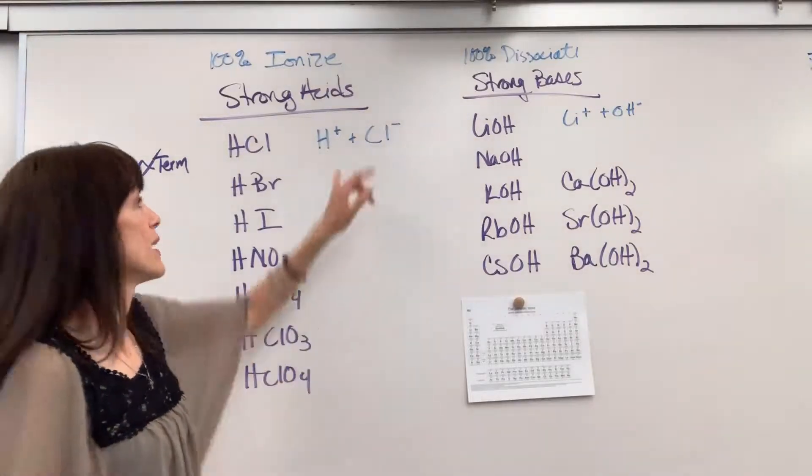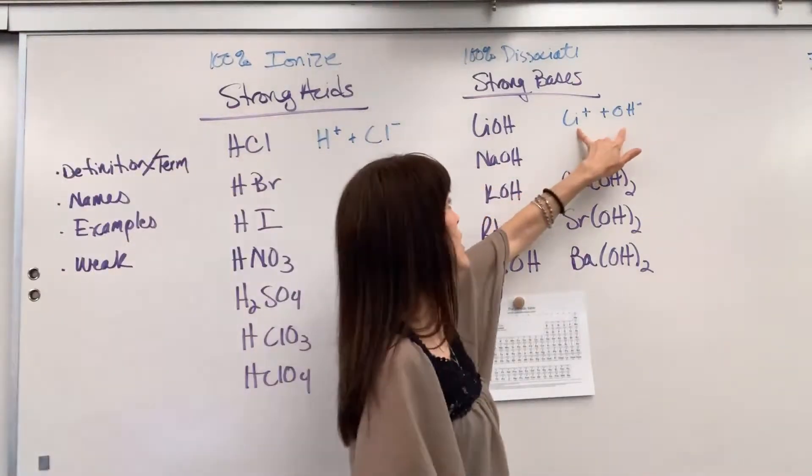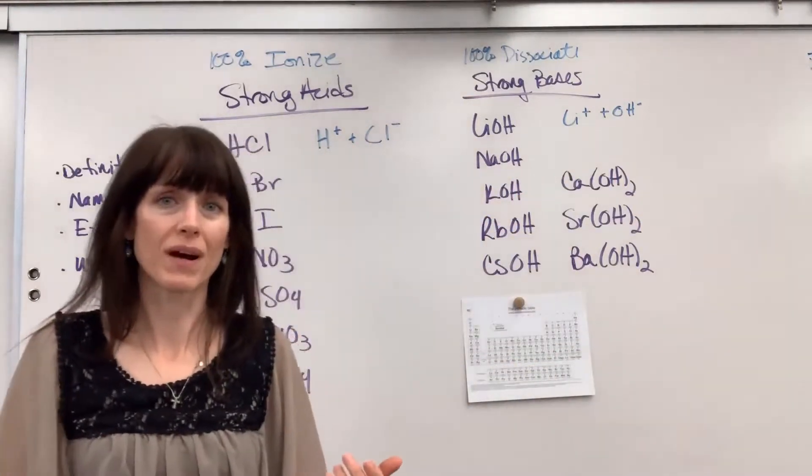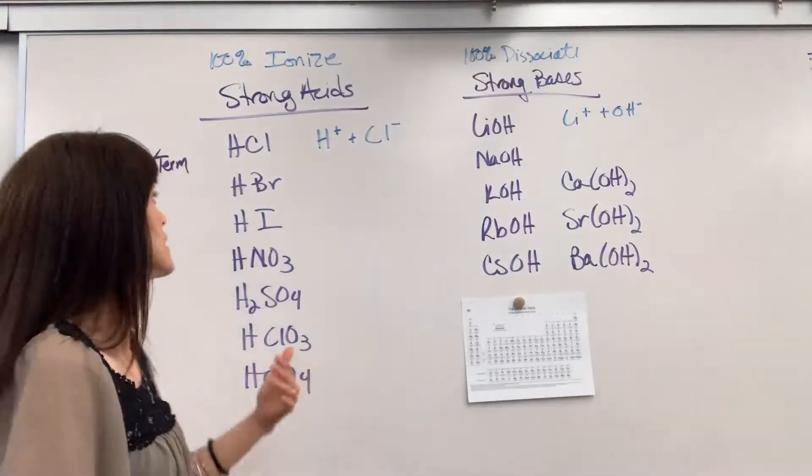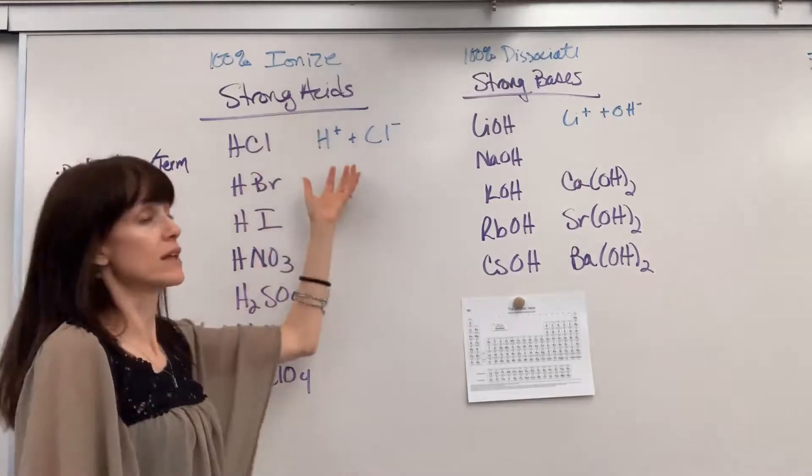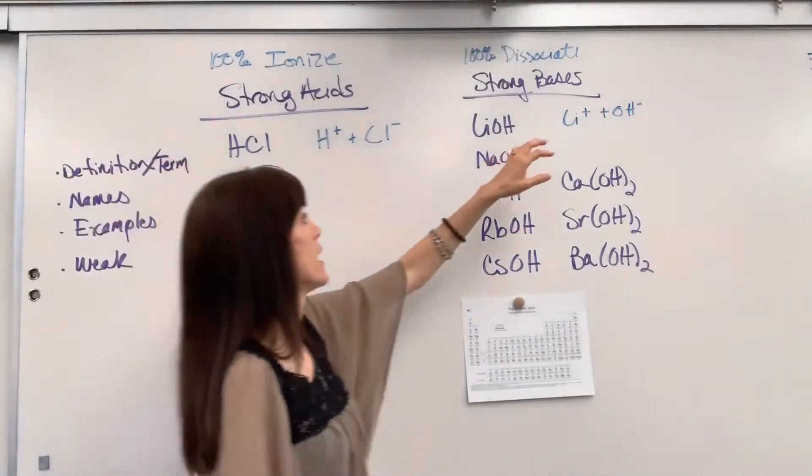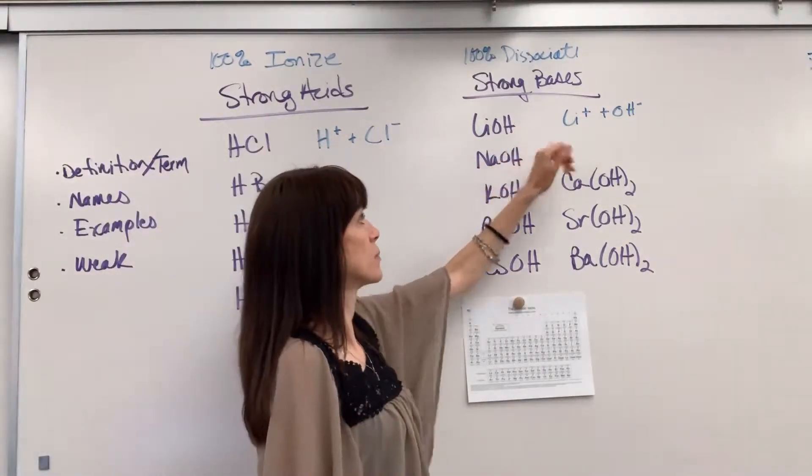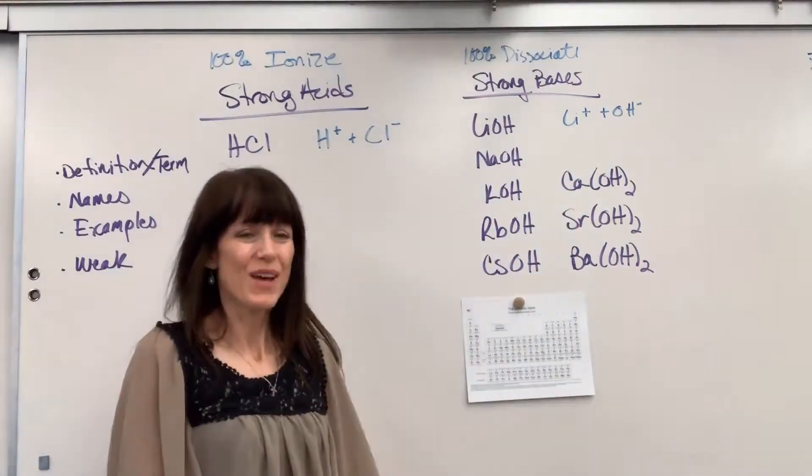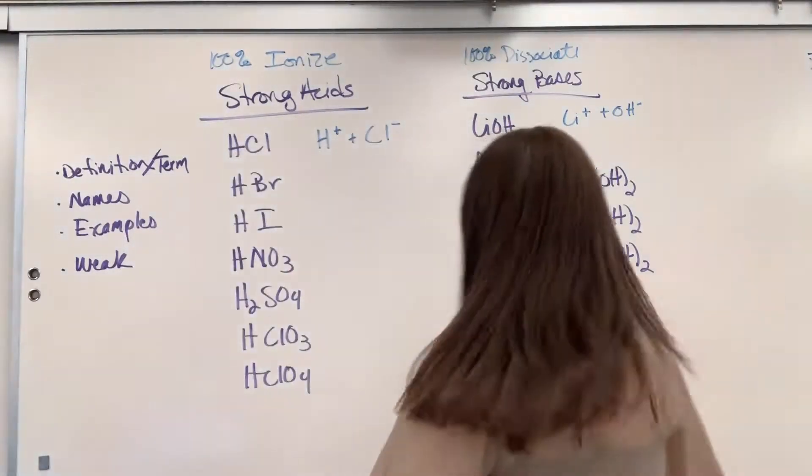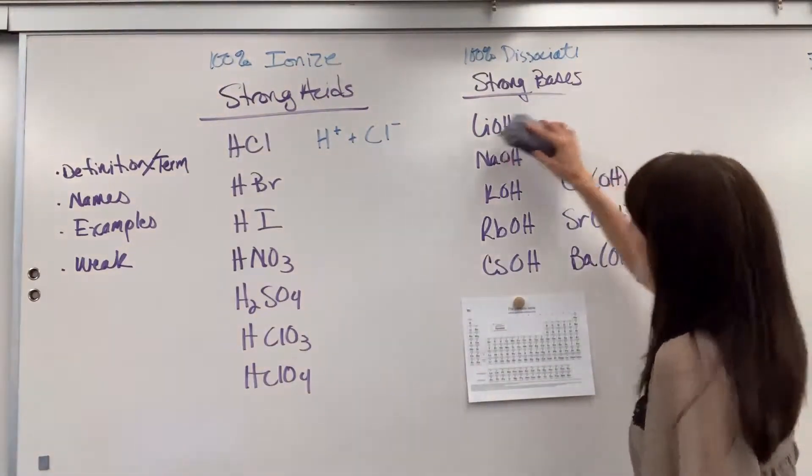So you can see they look the same. We have ions floating in water and they completely broke apart. We just use slightly different terms because of the type of bonding. The strong acids, covalent bonds become ions and the salts, the ionic bonds, they're already ions. So we say they dissociate. Okay, with that little detail there, let's look at the list.